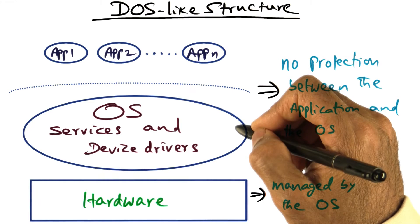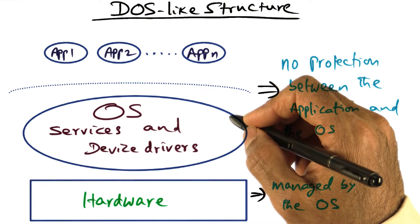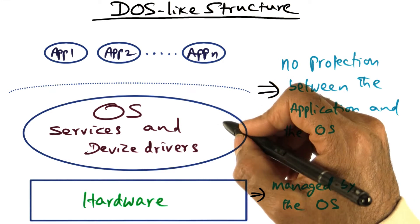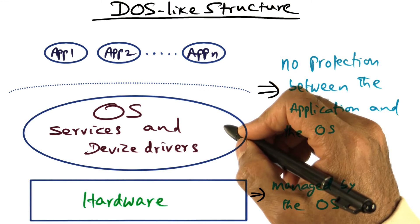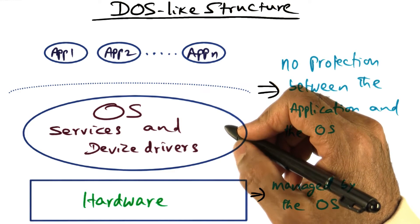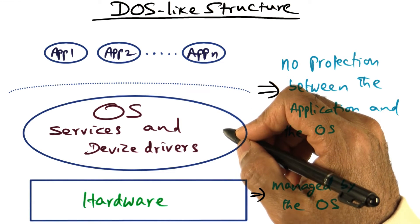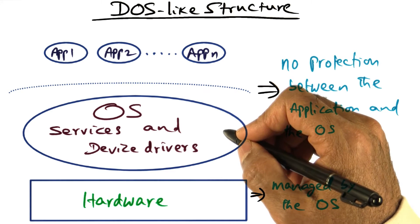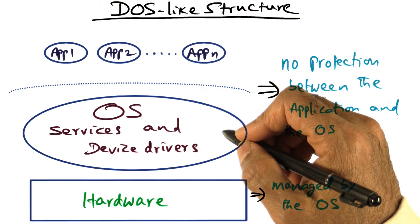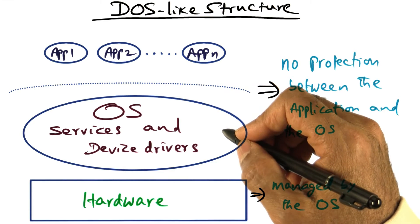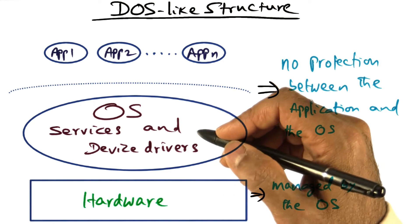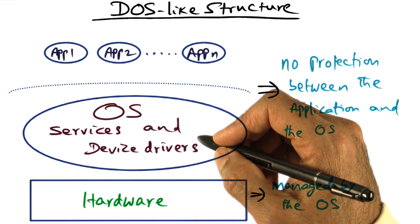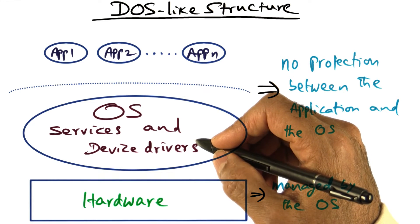You may wonder why DOS chose this particular structure. Well, at least in the early days of the PC, it was thought that a personal computer, as the name suggests, is a platform for a single user. And more importantly, the vision was there will be exactly one app running at a time — not even multitasking.